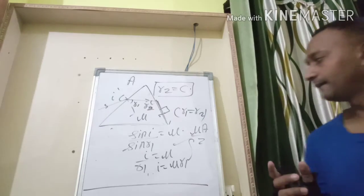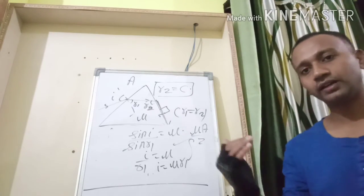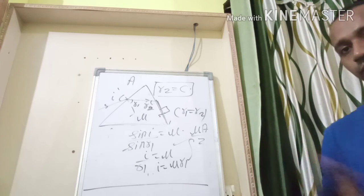So this is our solution. The minimum angle at which the light will suffer TIR on the second surface is μA/2. Thanks for watching.